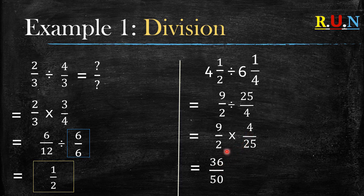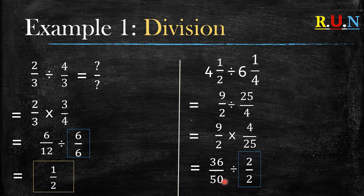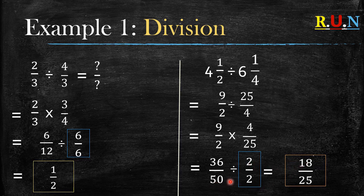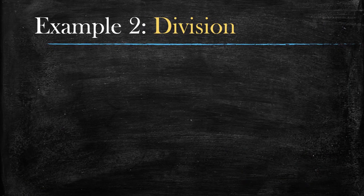From this point you can type 36 divided by 50 into your calculator to get the final answer, or you can use the highest common factor of 36 and 50, which is 2. So 36 divided by 2 gives you 18, and 50 divided by 2 gives you 25. So your final answer is 18 over 25.